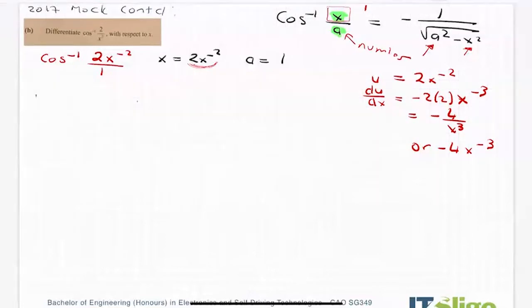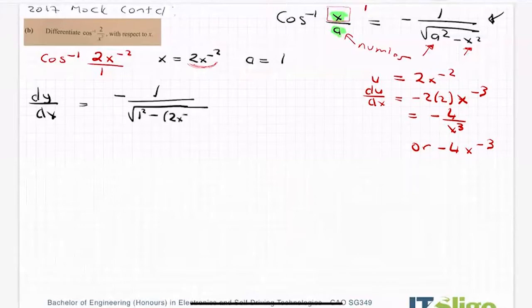Well, if I employ this rule, as you should, then I get minus 1 over the square root of my a term is 1. So 1 squared minus my x, which is 2x to the minus 2 squared, but it's chained. So I must multiply it by minus 4x to the minus 3.